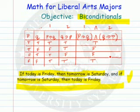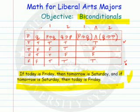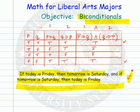So when is this biconditional true? It is true when both statements are true or both statements are false — when the antecedent and the consequent are both true or both false, then the biconditional is a true statement. Hope that helps you understand biconditionals, and as always, have a very happy day.